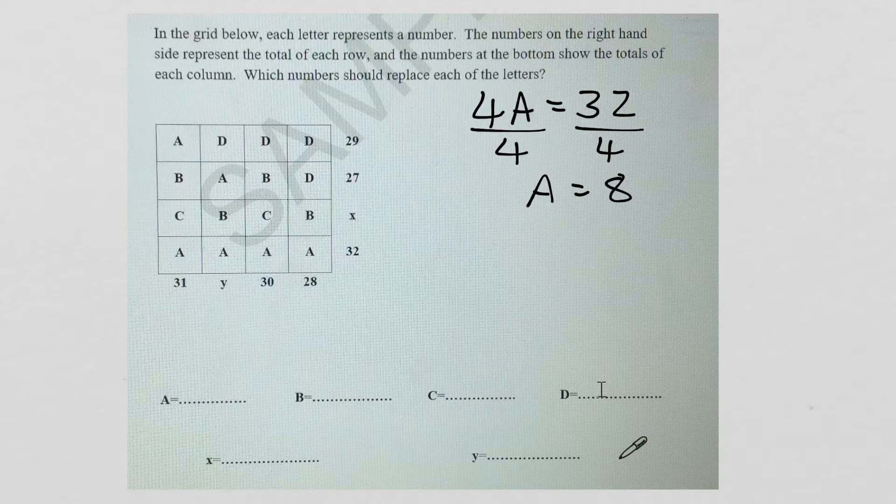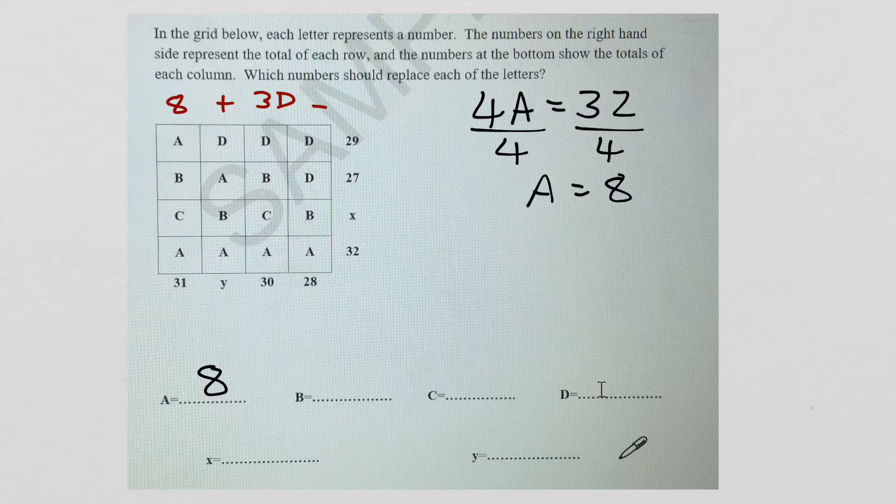And then when you find one, you can find the others by just substituting in. So if a is 8, then 3d plus 8 equals 29. Take 8 away from both sides. 3d equals 21. So d equals 7.